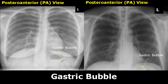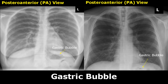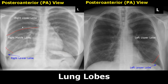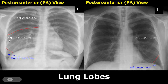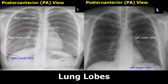The gastric bubble can also be seen on a chest x-ray. It is radiolucent due to the presence of gas in the stomach. The right lung consists of three lobes, whereas the left lung is divided into two lobes. The majority of the right lung is occupied by the upper and middle lobe, and only a small portion of the lower lobe is seen in the region above the right costophrenic angle. Similarly, only a small area above and around the left costophrenic angle is the left lower lobe, and the rest of the lung is the upper lobe.